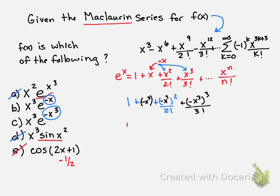So now I've got 1 minus x cubed plus x to the sixth over 2 factorial. And none of this is right either,